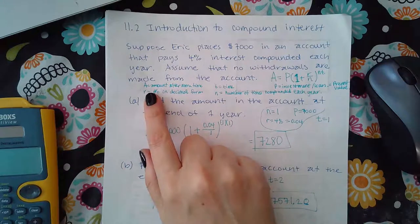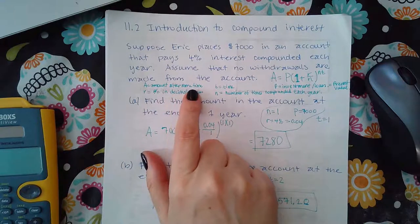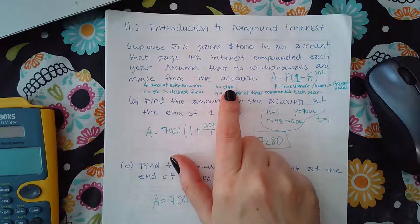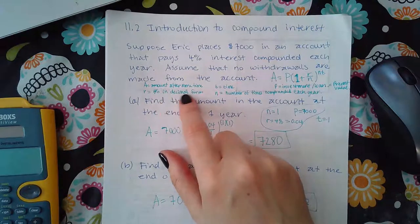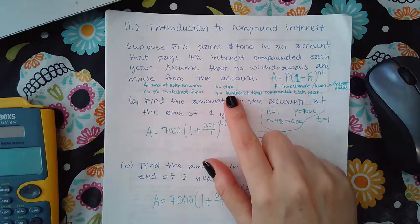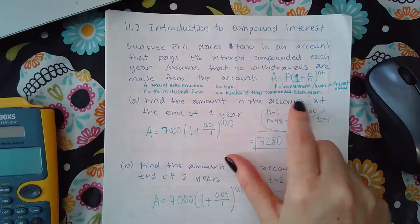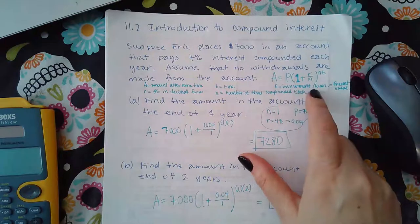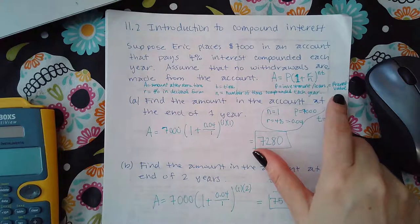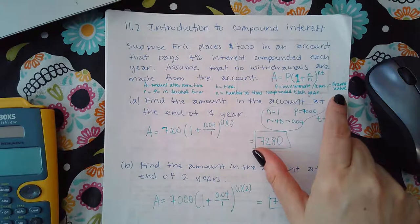A is the amount after some time. T is the time. R is the rate, the percentage in decimal form. And then n, of course, is the number of times that it's compounded each year. And P is the investment or the loan, also known as the present value, because that's what you start with.